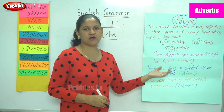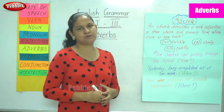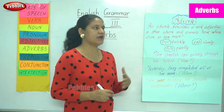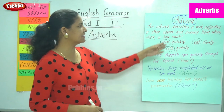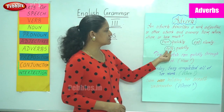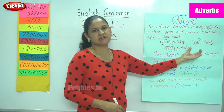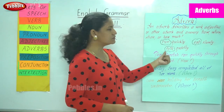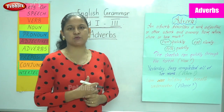So an adverb describes a verb, an adjective, and another adverb, and answers the questions how, when, where, and how much. Examples: 'run quickly' describes the verb run; 'talk quietly' describes the verb talk; 'eat slowly' describes the verb eat — all answering the question how.